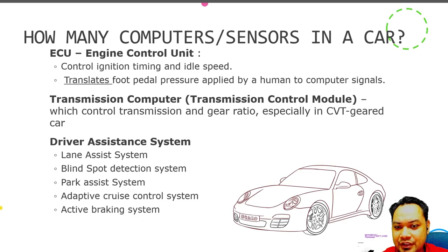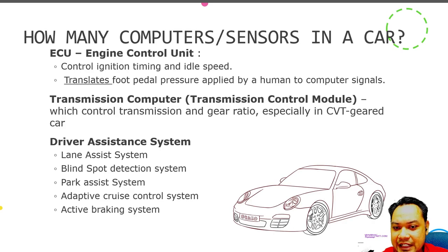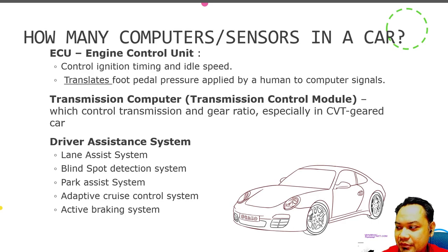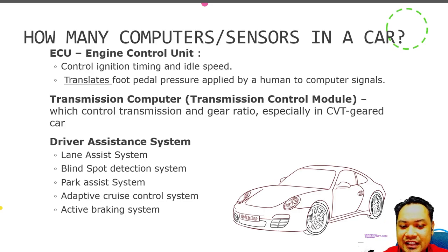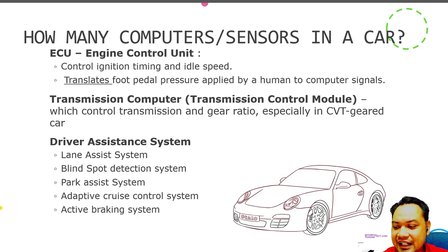Every car produced after the year 2000 has been mandated to include an Engine Control Unit or ECU — a type of computer that controls ignition timing, idle speed, and translates foot pedal pressure into a computer signal. Some cars also have a Transmission Control Module to control transmission and gear ratio, especially in CVT-geared cars. Additionally, add-on systems such as lane assist, blind spot detection, parking assist, and adaptive cruise control are all designed to be controlled by a computer inside the car.